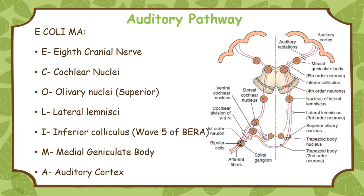To remember the auditory pathway easily, remember the mnemonic 'E-C-O-I-M-A': E stands for eighth cranial nerve and cochlear nuclei; O stands for superior olivary nuclei and lateral lemniscus; I stands for inferior colliculus; M stands for medial geniculate body; and A stands for auditory cortex.